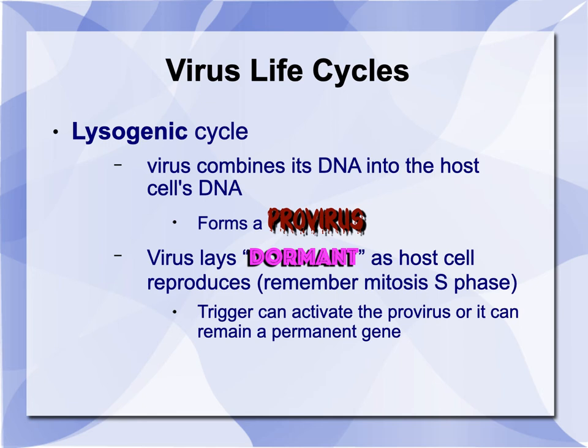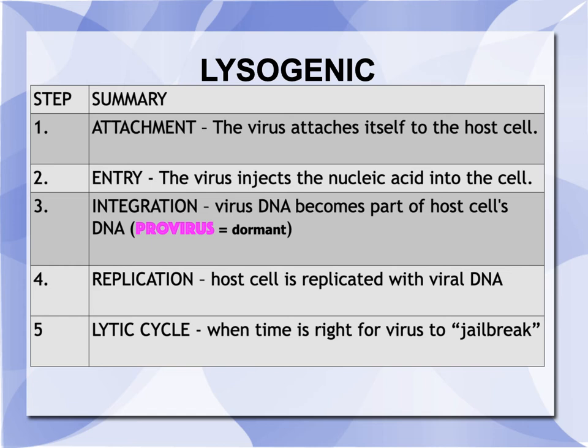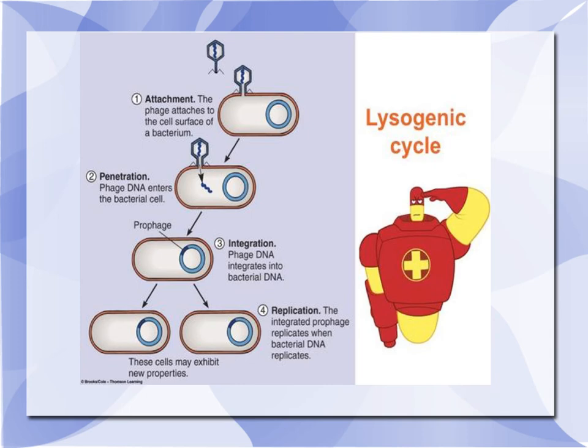The lysogenic cycle: the virus combines its DNA into the host cell's DNA, and what's formed is called a provirus. In this sense, the virus can lay dormant as the host cell reproduces, and every time the host cell reproduces it makes a copy of its DNA, so it copies the virus — more of a let's wait and see approach. Then there might be some trigger that activates the provirus, and then it kicks on a lytic cycle. So lysogenic is: attach, entry, integrate as a provirus, be dormant, replicate with viral DNA, and if they get the proper trigger, undergo a lytic cycle.